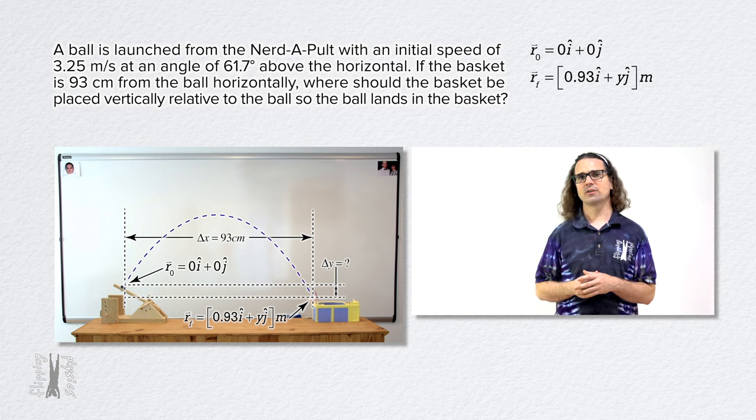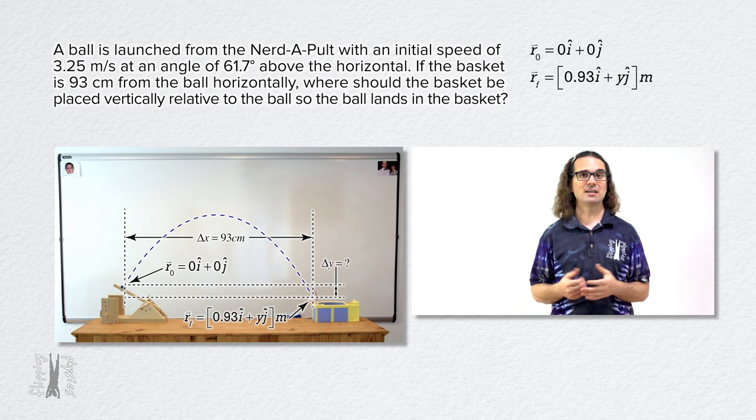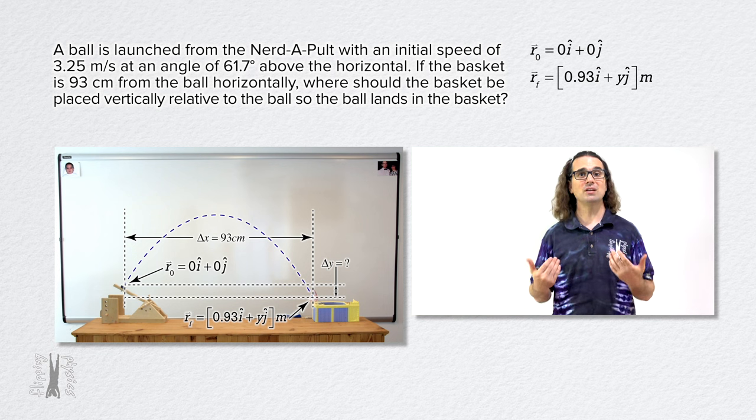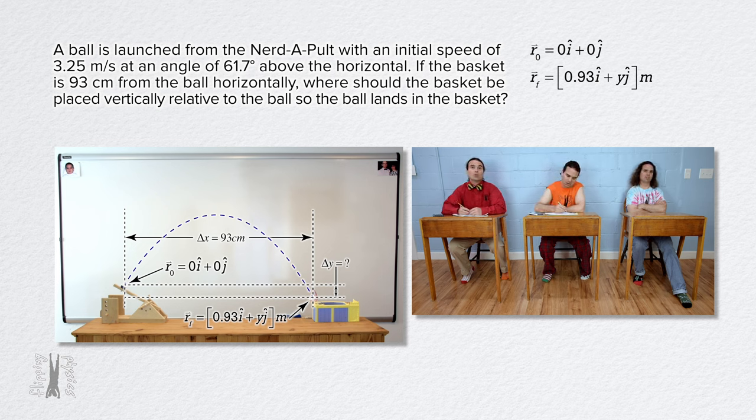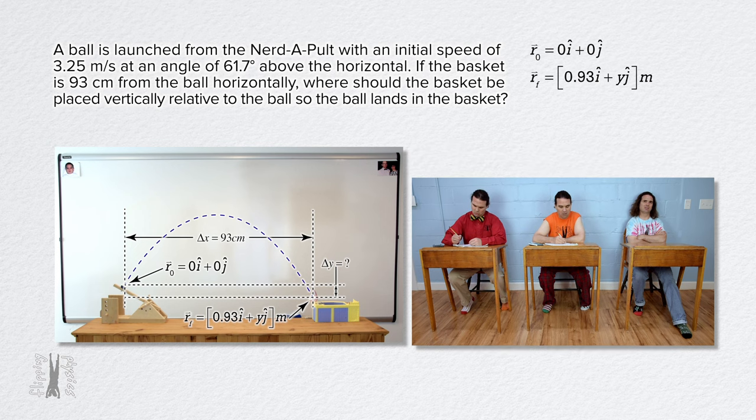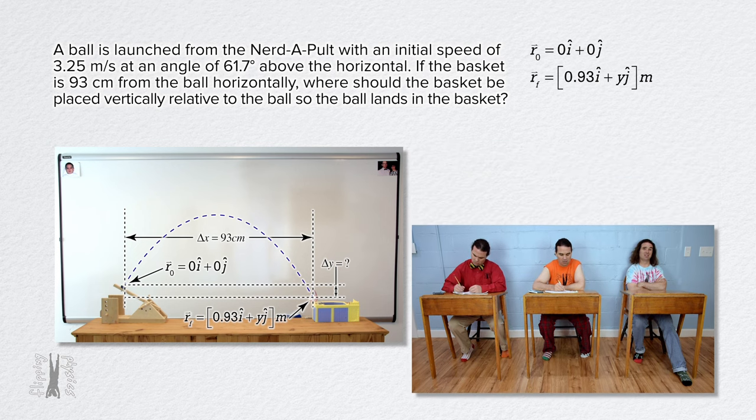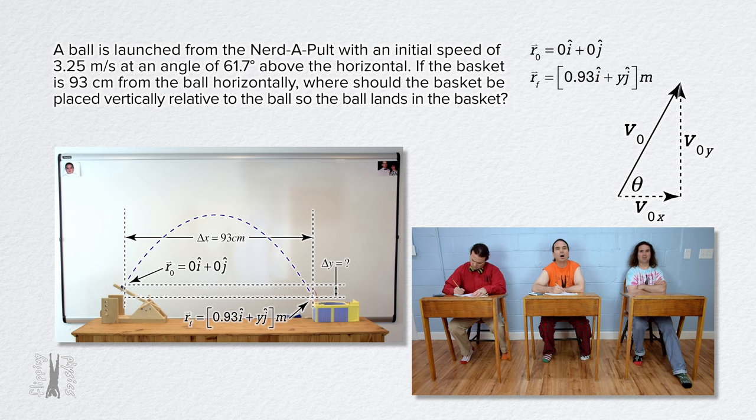All right, Bo, your turn. Please determine the initial velocity of the ball in terms of unit vectors. Okay, well, the initial velocity given in the problem is in terms of magnitude and direction. So, we are going to need the x and y direction components of it. Okay, I think I know how to do this.